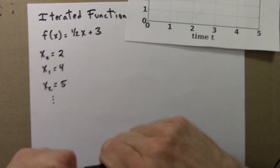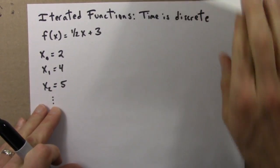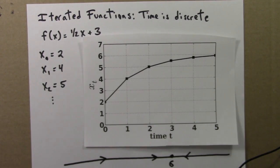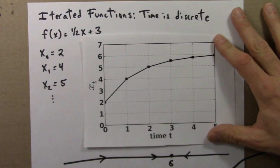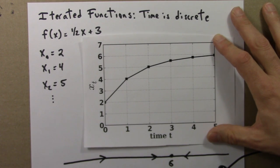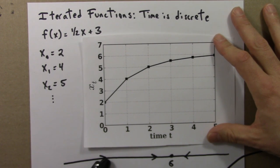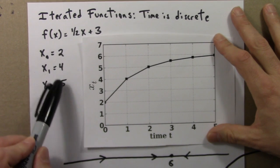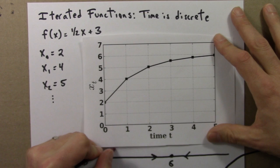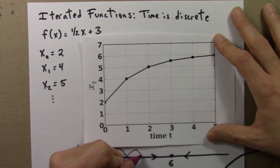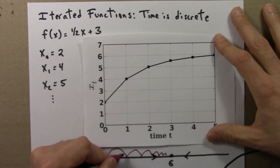We can draw a phase line. It turns out that this function has a single attracting fixed point at 6, so we've got arrows coming in to the fixed point at 6. If we look at this phase line, we might think that a point would start here and just slide right into 6, but actually it jumps — from 2 to 4 to 5 and so on. Maybe one should draw it like this: here's the first jump, the next jump, the next jump, and so on.